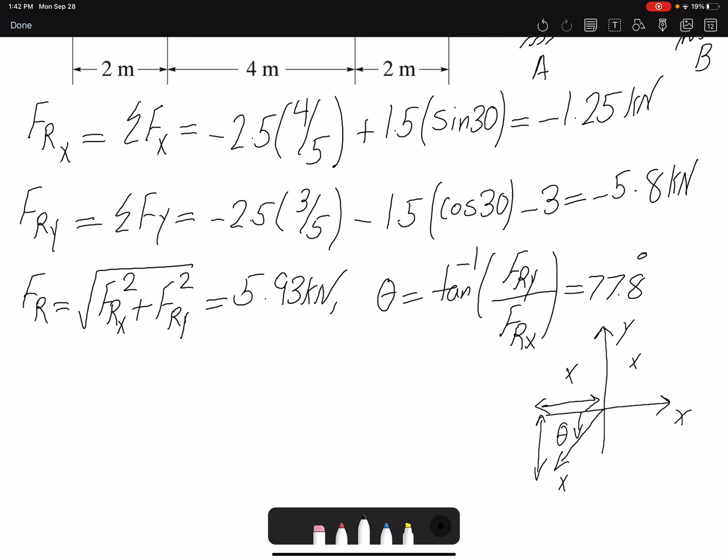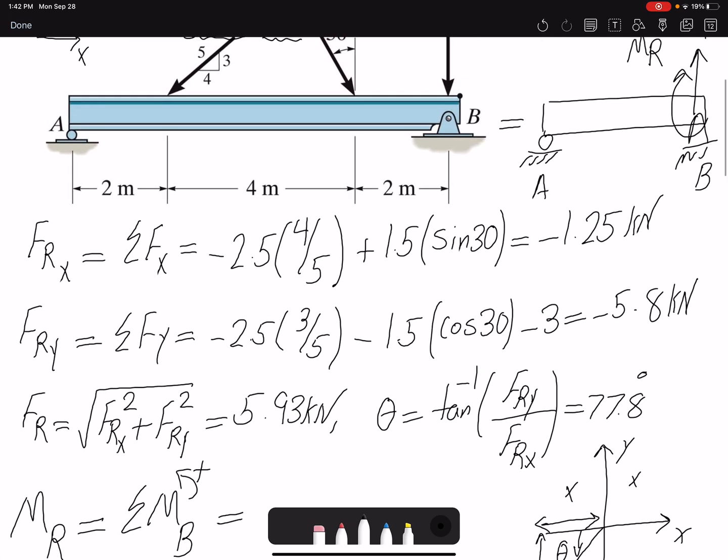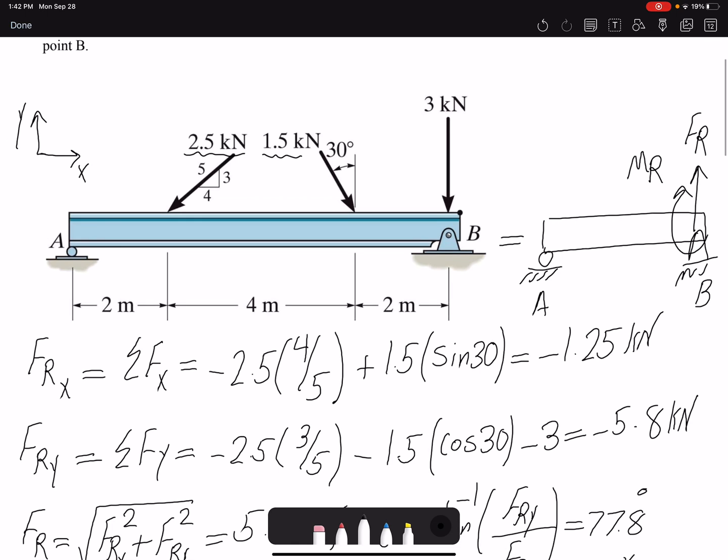So our next task is to find the resultant moment. So the resultant moment that we are going to use should be the same as summation of moment about point B. We're going to assume counterclockwise to be positive. So let's see what forces are going to create a moment for us. For a moment at point B, our 3 kilonewton is not going to create any moment because it doesn't have any moment arm.